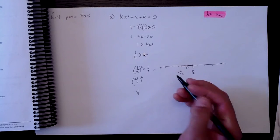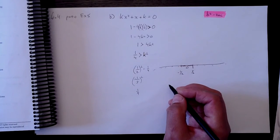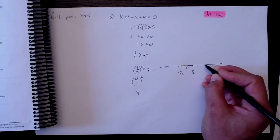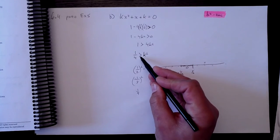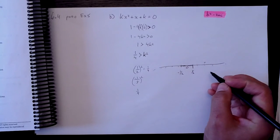What if I had something larger? What if I had 2? 2 squared is 4, and 4 is not less than 1 quarter, so that wouldn't work.